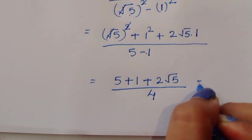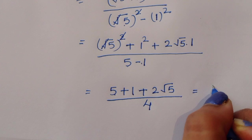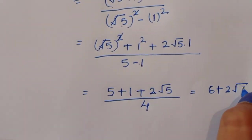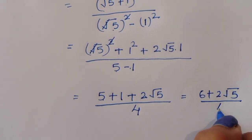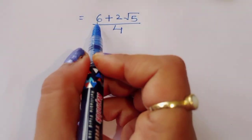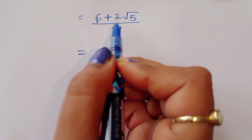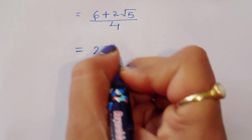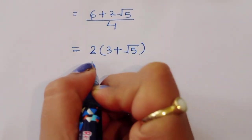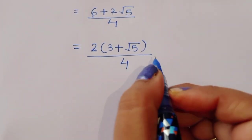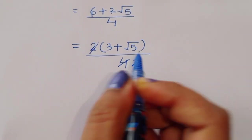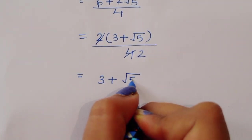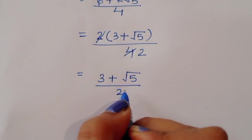So the denominator is 4. The numerator becomes 5 plus 1, which is 6, plus 2 square root of 5. That gives us 6 plus 2 square root of 5, divided by 4. We take 2 as a common factor: 2 times 3 plus square root of 5, divided by 4. Cancelling the 2, we get 3 plus square root of 5, divided by 2. This is the solution for Method 1.